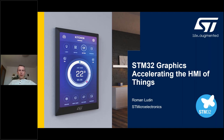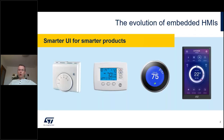One of Roman's roles at ST is to follow graphical user interface applications from customers, supporting them in terms of hardware selection — what the best product is for a given display interface and display type — and collecting customer feedback to ensure that the future product roadmap and ecosystem offering will be in line with their needs. Today he will give a nice overview of how to start when thinking of implementing a graphic user interface in your end product, and which product to pick from the STM32 family.